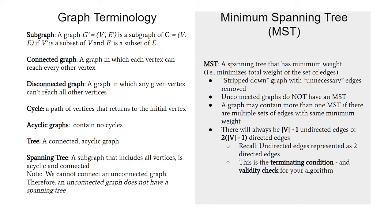A disconnected graph is if I have any vertex — maybe it's one, maybe it's a group — but I can't reach it from all the other vertices, or if I start at that vertex I can't reach the others. A cycle is if I can start at a vertex, go along a series of edges without going along the same edge twice, and then reach back to the vertex I started with. If a graph has no cycles at all, we call it an acyclic graph.